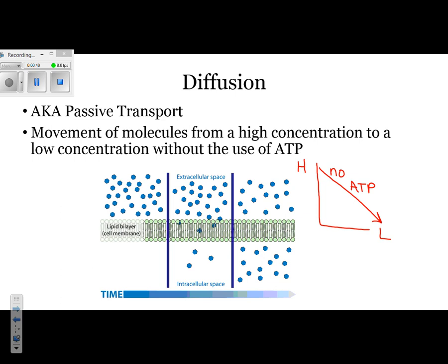If we refer to the diagram, look at the blue dots. The blue dots represent different particles. In the first section, you'll notice there is a high concentration outside of the cell because there are lots of blue dots. Inside the cell, there are no blue dots. Since there are no blue dots, that would be considered a low concentration.